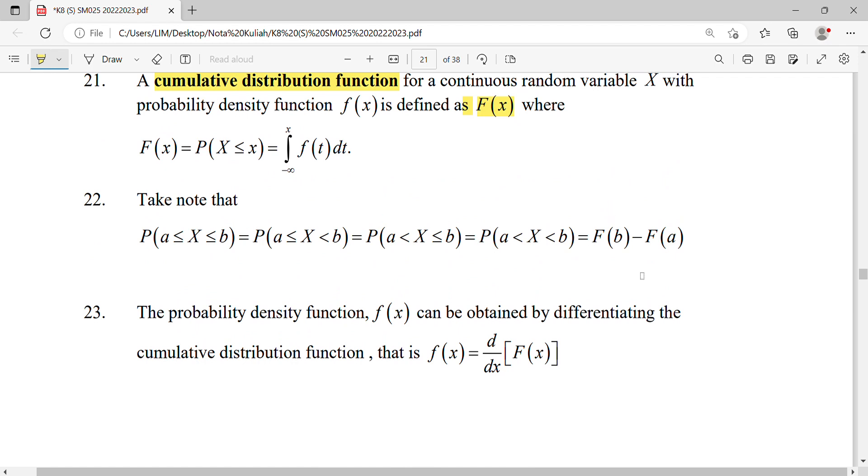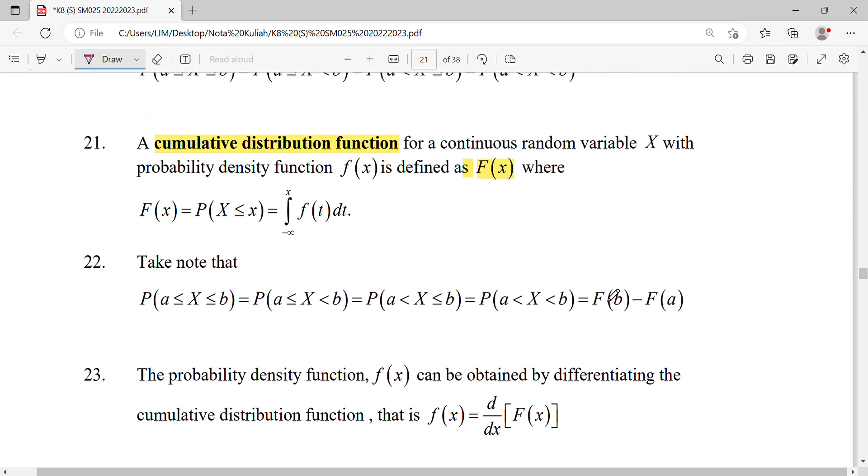Like I said before, in continuous random variables, whether you have equal signs or not—equal to b or not equal to a—they're all the same. To find probability from the cumulative distribution function, we accumulate the maximum possible area, which is F(b) minus F(a). Ada equal or tak ada equal, sama sahaja.